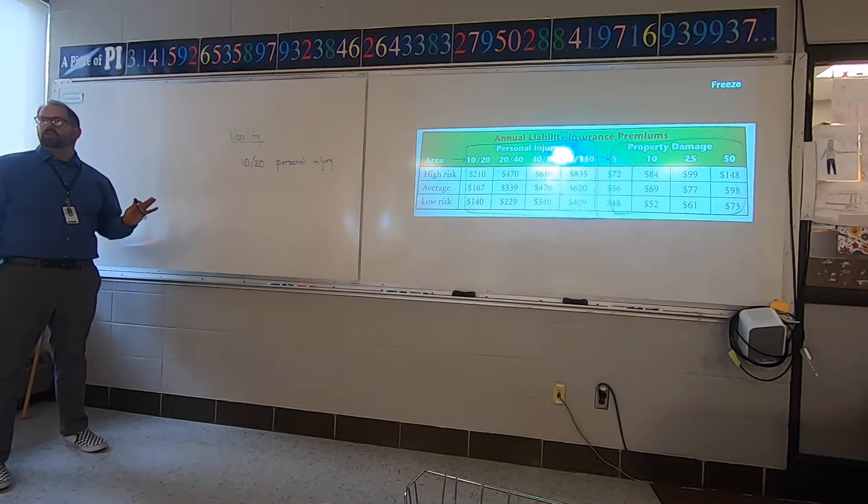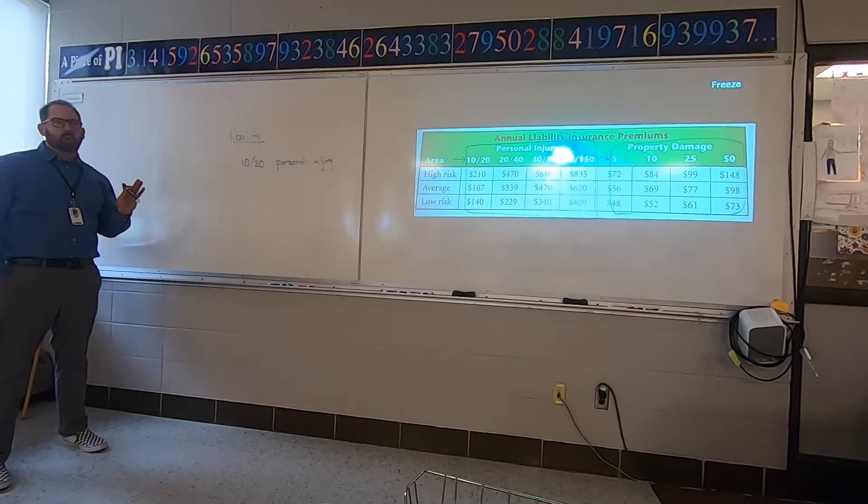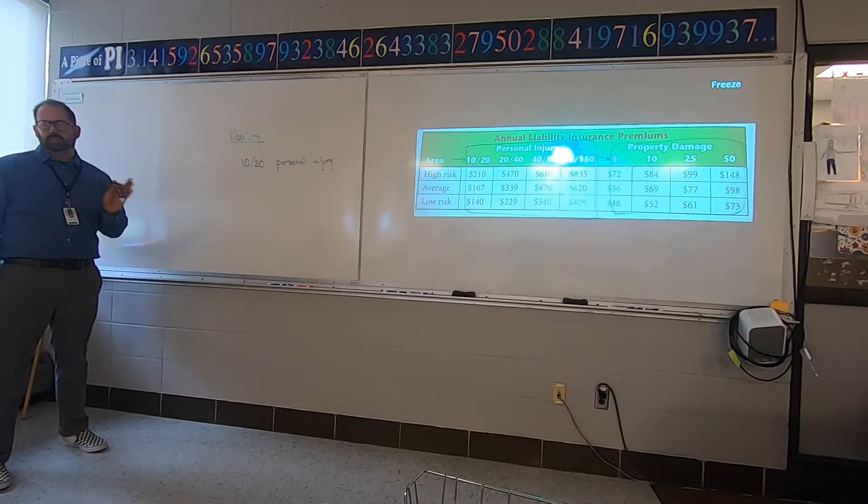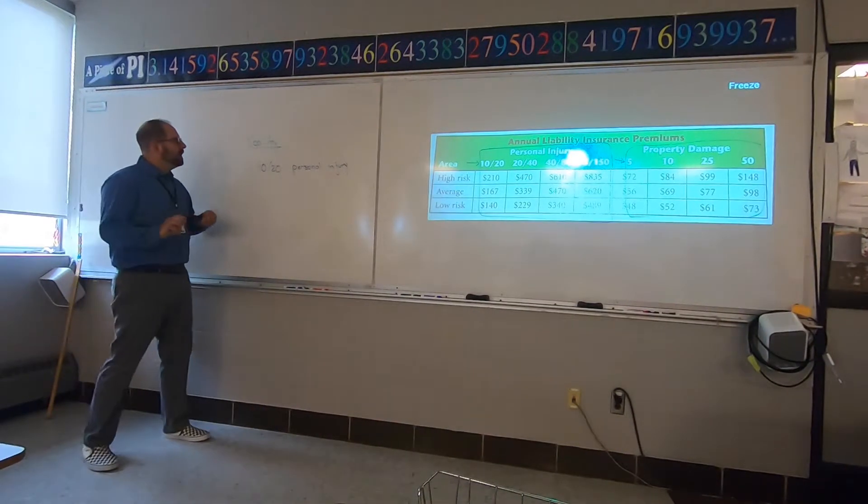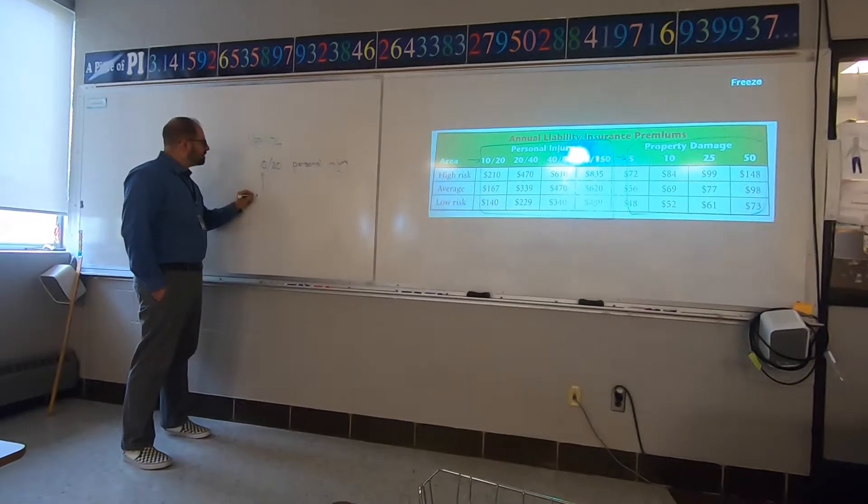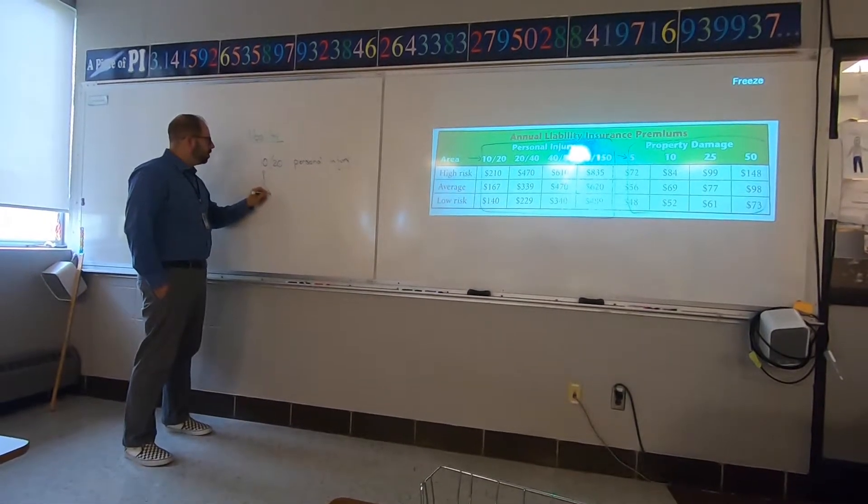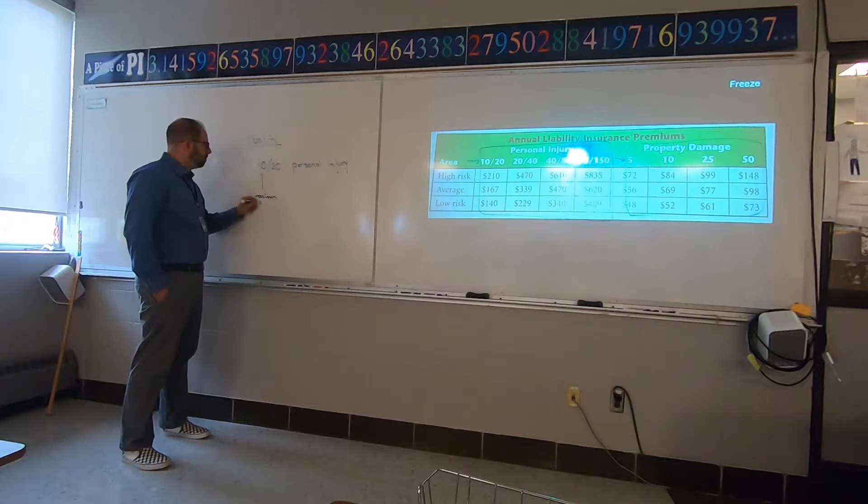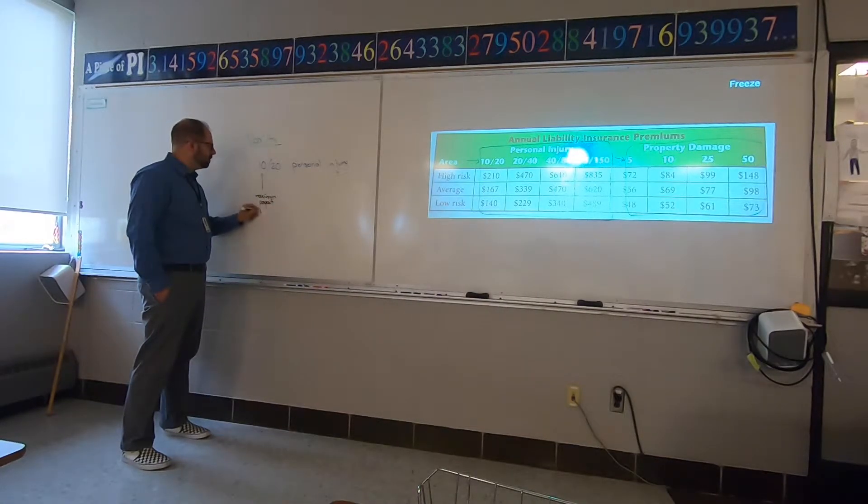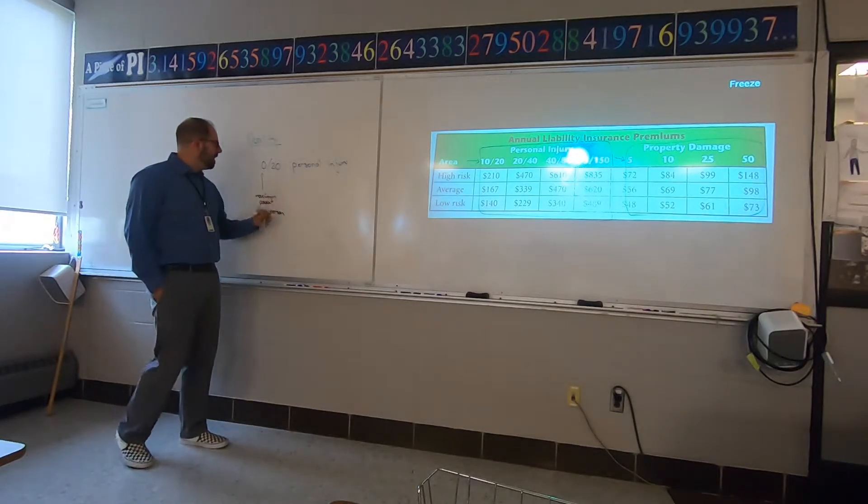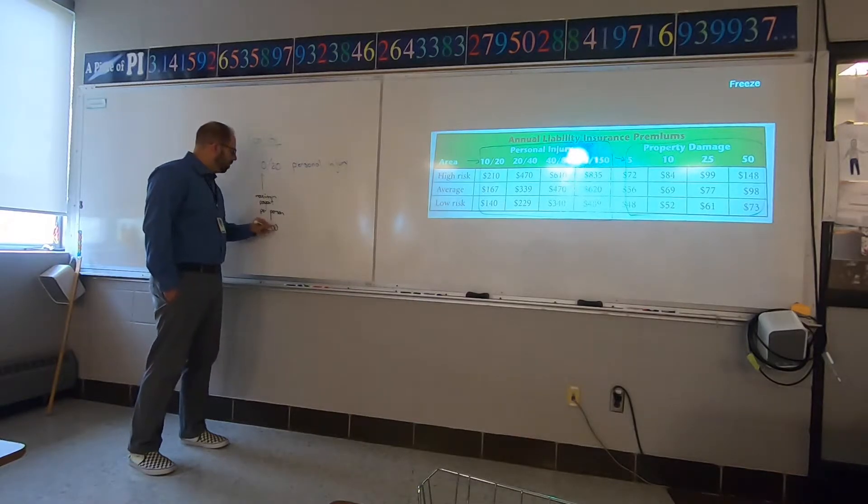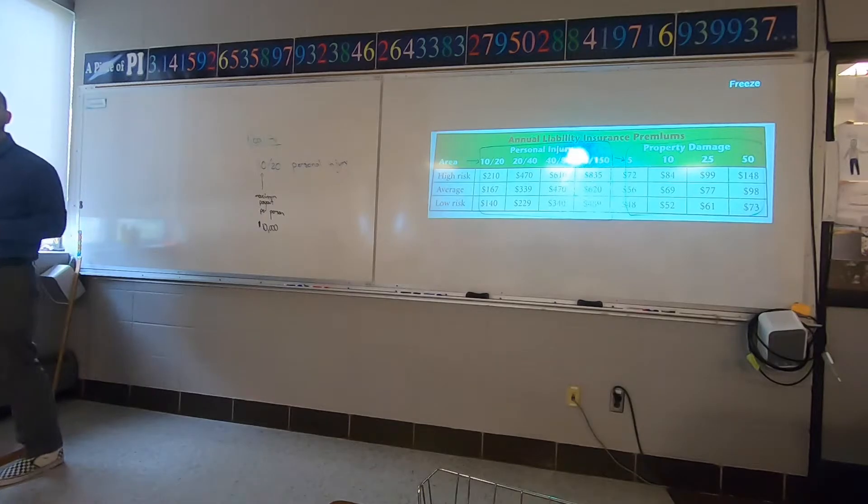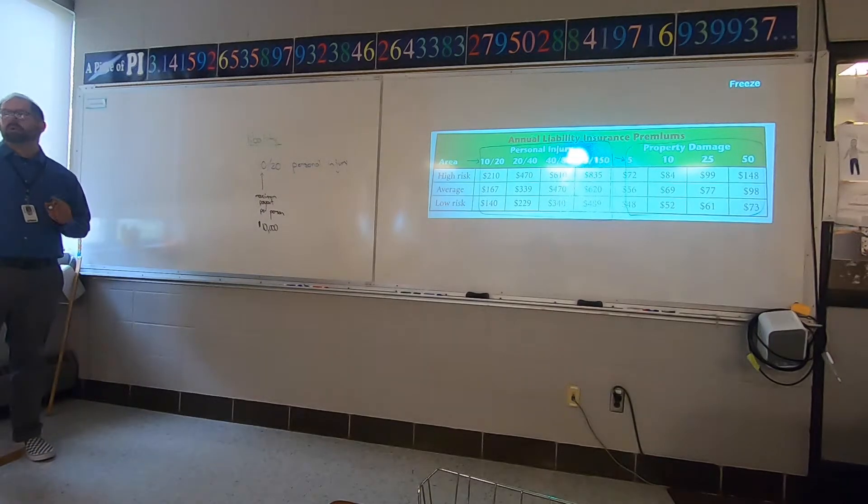Personal injury here for liability. What this number is: we're going to look at the first number, the 10/20 route. Here's how it works. This number is the maximum payout per person. That means what 10 stands for is it will be a maximum payout of $10,000 damages to one single person covered in an accident. Maximum 10 per person.